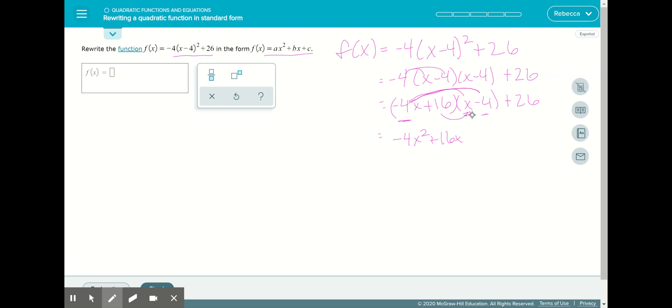So 16 times x. And then we're going to do 16 times negative 4. So minus 64. And add 26.